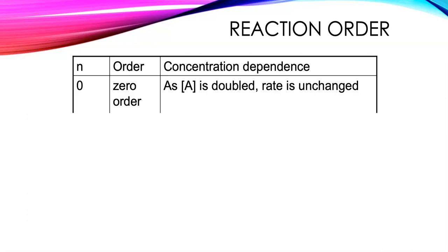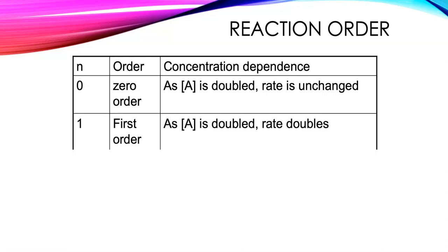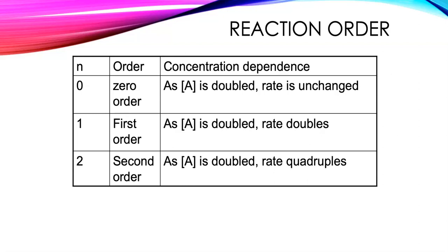When n is zero, we say it's zero order in that particular reactant — if we double the concentration of A, the rate isn't affected at all; whatever concentration change we make to A, it won't affect the rate. When n equals one, we call this a first order process — doubling the concentration of A doubles the rate, so it goes linearly with the change in concentration. When n equals two, it's second order — doubling the concentration of A quadruples the rate, meaning we go with the square of the change. Zero, one, or two is the most common outcome.